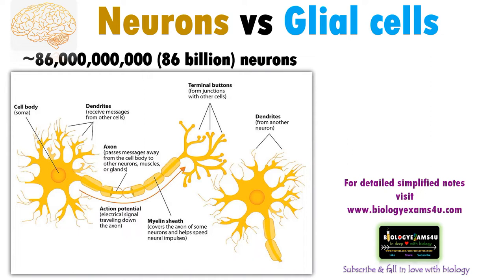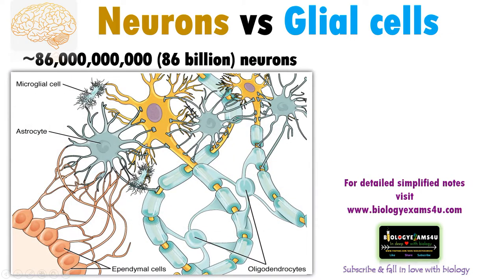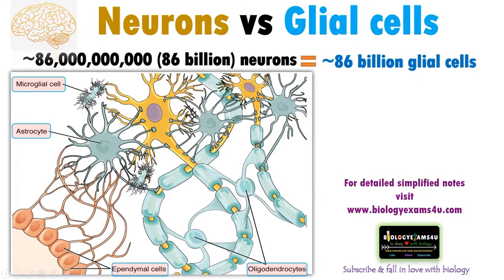This is a nerve cell or a neuron, but actually a neuron looks like this. Along with neurons, there are many other cells present, such as microglial cells, astrocytes, ependymal cells, oligodendrocytes, and others. All cells other than neurons or nerve cells are called glial cells. There are approximately 86 billion glial cells, indicating the importance of glial cells in the normal functioning of neurons.